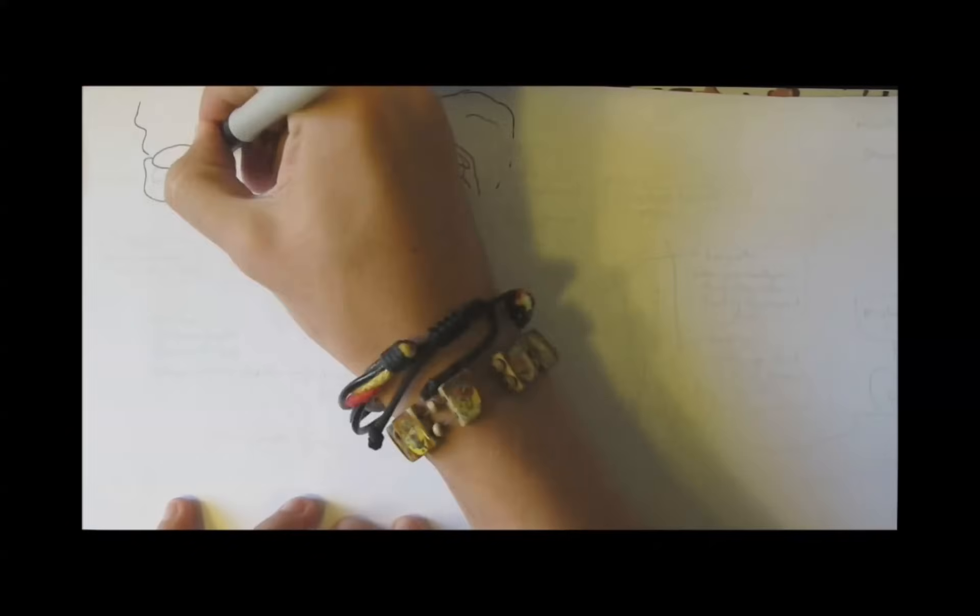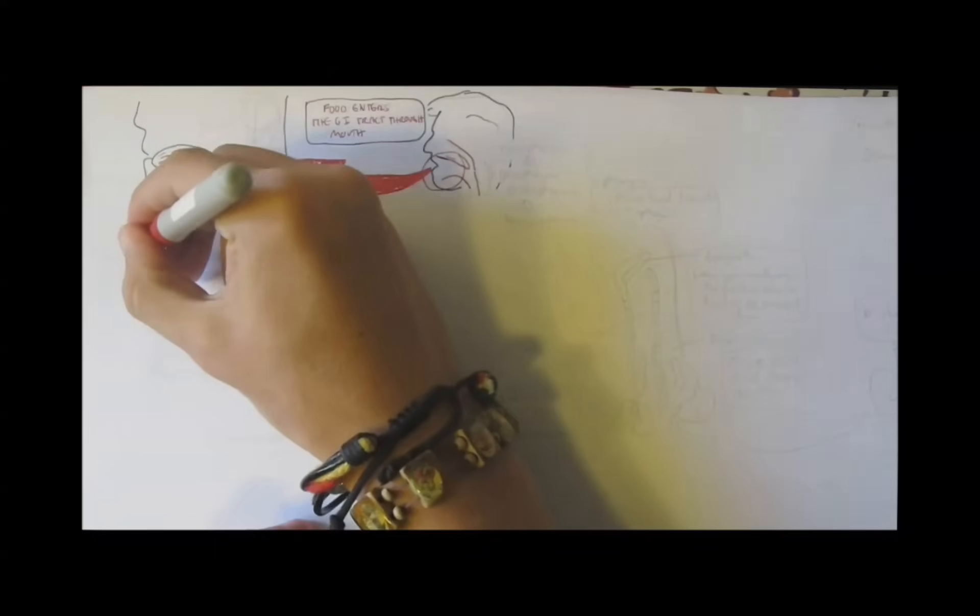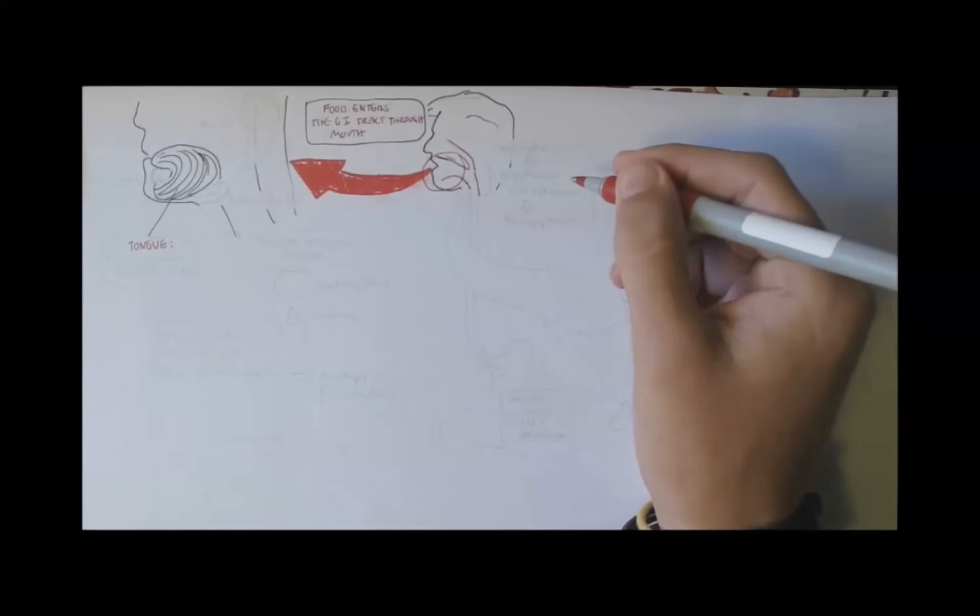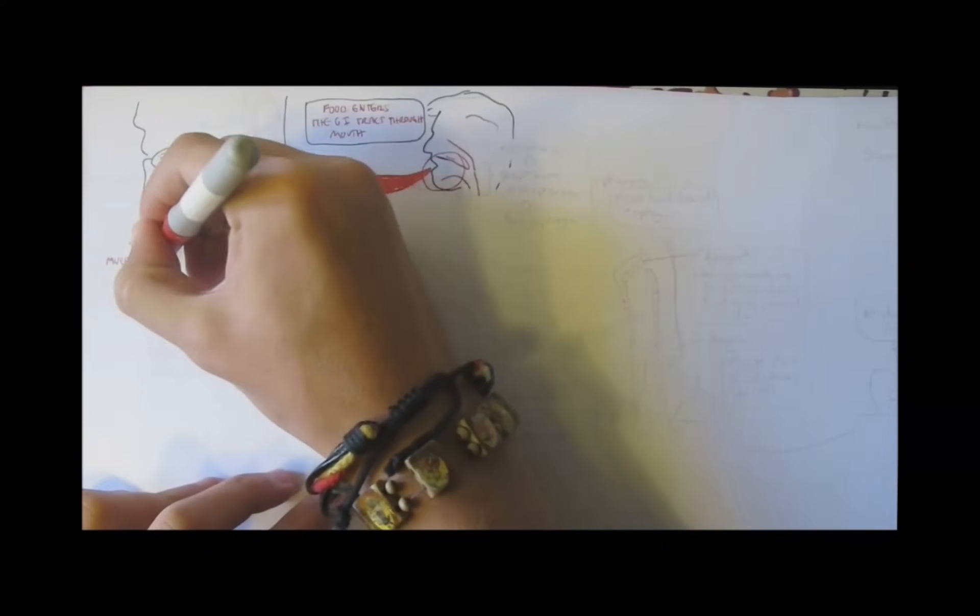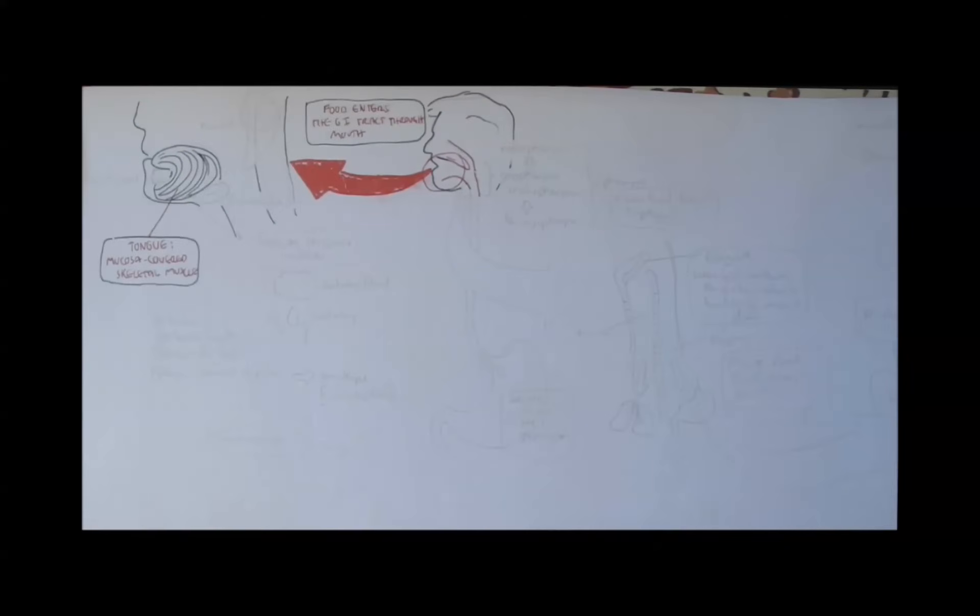So around here we have the tongue, which actually looks like this if you cut a cross-sectional view of it. And the tongue is a mucus-covered skeletal muscle. What is mucus? Mucus is a liquid composed of water, immune cells, and electrolytes for protecting our tract.